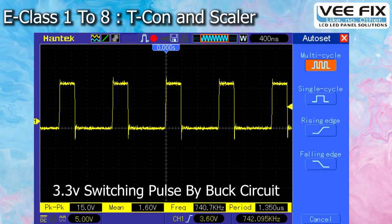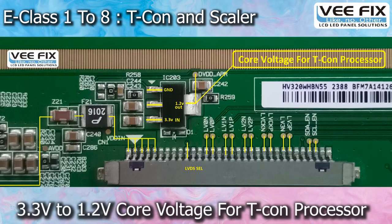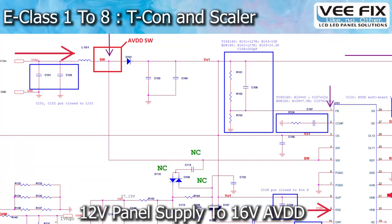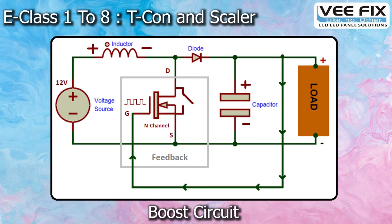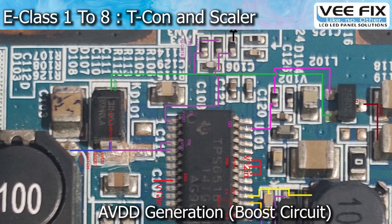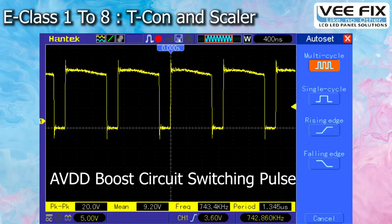After creation of this 3.3V, the 1.2V for the core supply and 1.8V for the memory supply are also created from this 3.3V. The next step is AVDD generation. For AVDD, there is a boost circuit that generates 15-16V from the 12V input. There is a combination of inductor coil and diode, and a switching pulse from the DC to DC IC is supplied to this boost circuit.